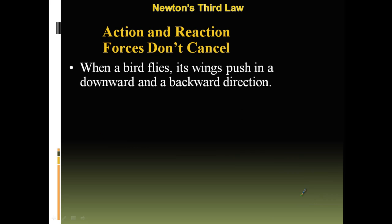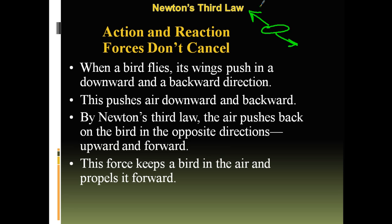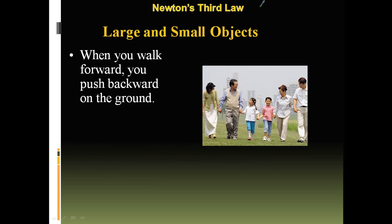When a bird flies, its wings push in a downward and backward direction. This pushes air downwards and backwards. By Newton's third law, the air pushes back on the bird in opposite directions. This force keeps the bird in the air and propels it forward. That's how birds fly.